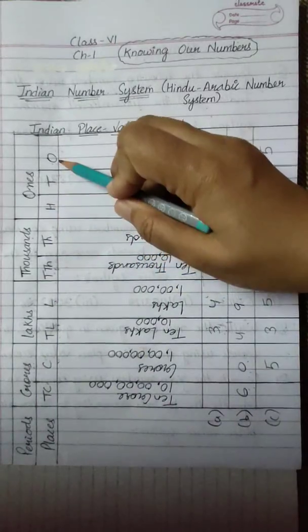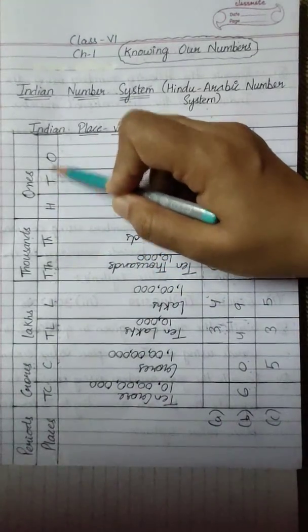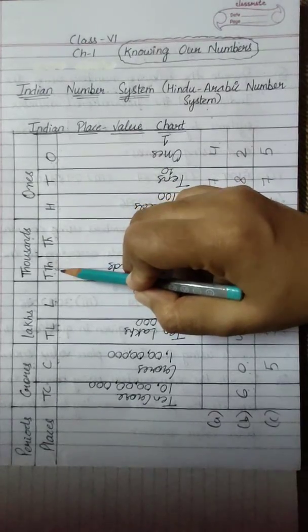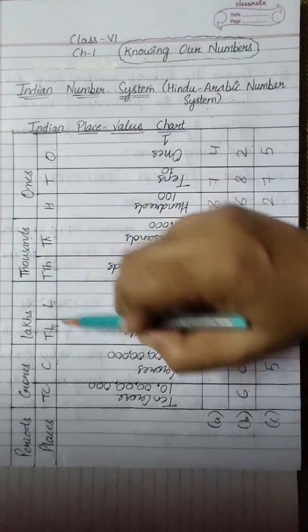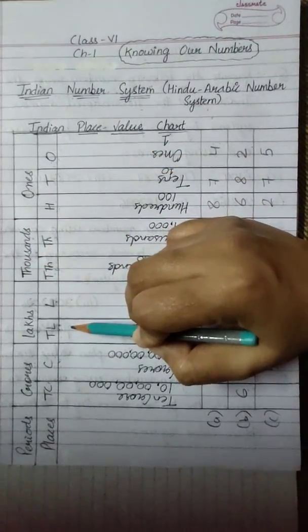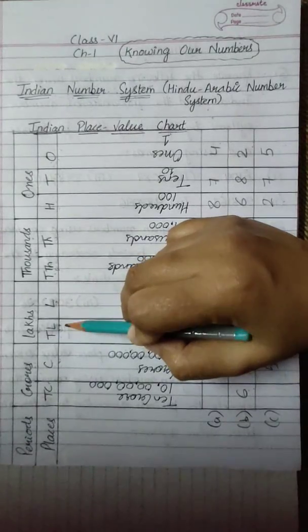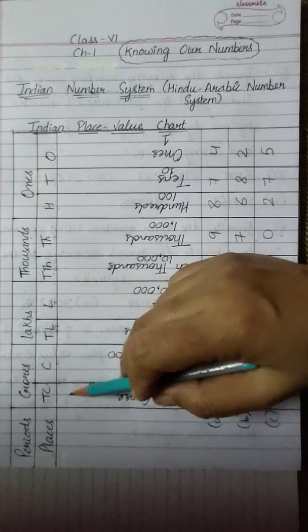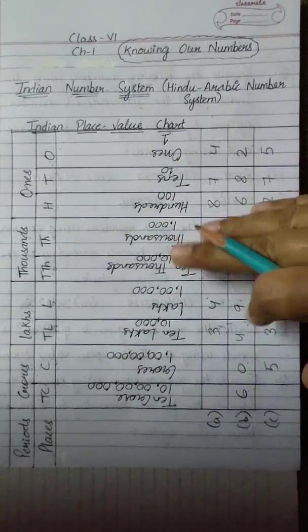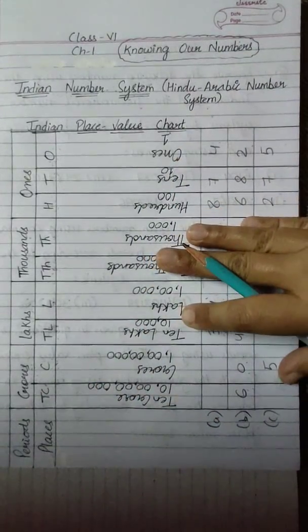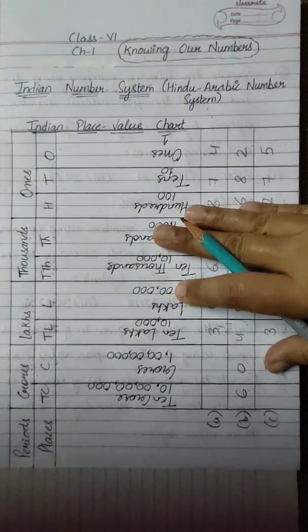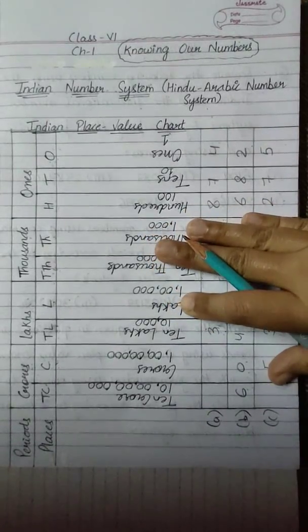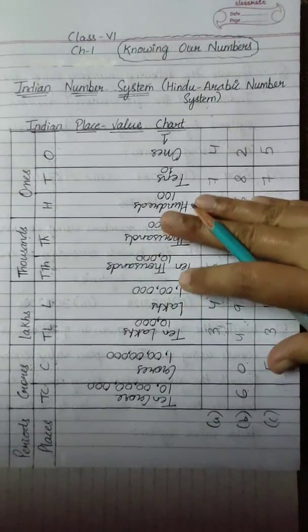From the right, the first three places form the ones period. The next two places form the thousands period. The next two places form the lakhs period and the next two places form the crores period. While reading a number, all the digits in the same period are read together and the name of the period, except the ones, is read along with them.